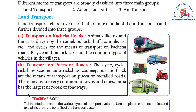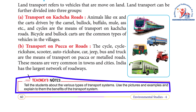B) Transport on pakka roads: the cycle, cycle rickshaw, scooter, auto rickshaw, car, jeep, bus, and truck are the means of transport on pakka or metal roads. These means are very common in towns and cities. India has the largest network of roadways.